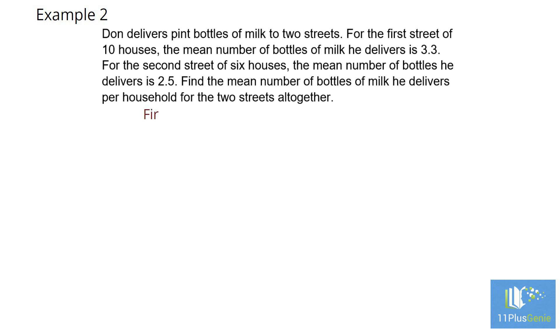For the first street, we have a mean of 3.3 and a count of 10. We can immediately work out the total number of bottles delivered by using total equals mean times count, which is 3.3 times 10 to give us a total of 33.